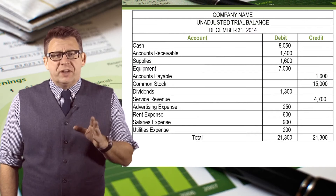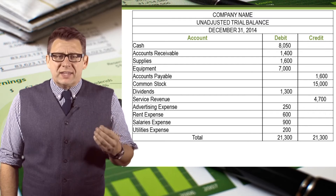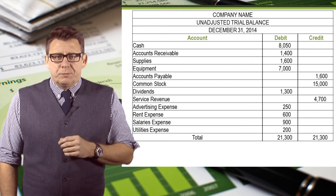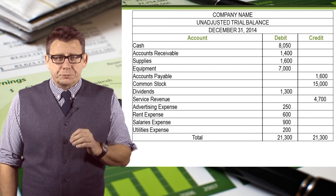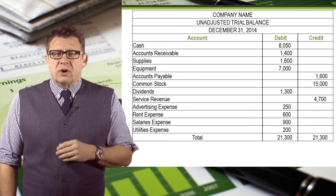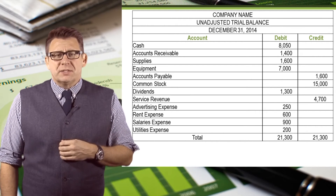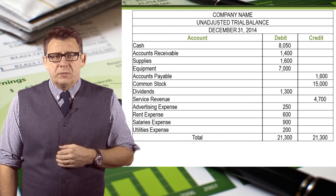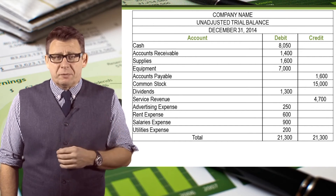Much of what we've covered in this video deals with the trial balance in general. I'd like to identify why this is an unadjusted trial balance. Other than telling us the balances of our ledger accounts at this time and whether or not our debits equal our credits, the unadjusted trial balance doesn't tell us very much. For example, look at the supplies balance — that balance has likely come from the purchase of supplies during the month. However, it may not be the amount of supplies on hand at the end of the month if we've used some of them.